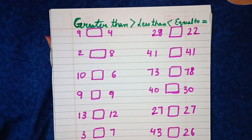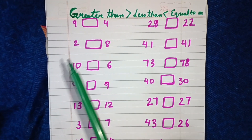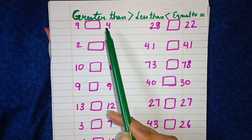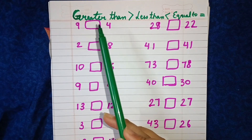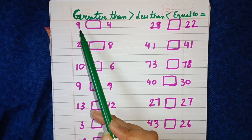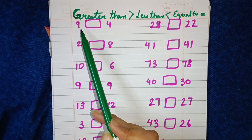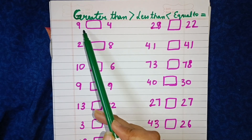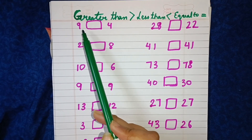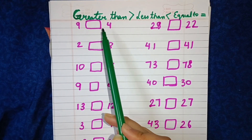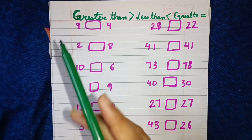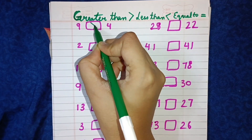So children, here you can see there are two numbers: 9 and 4. We will see whether 9 is smaller than, greater than, or equal to 4. We know that 9 is greater than 4, so we will put the greater than sign.